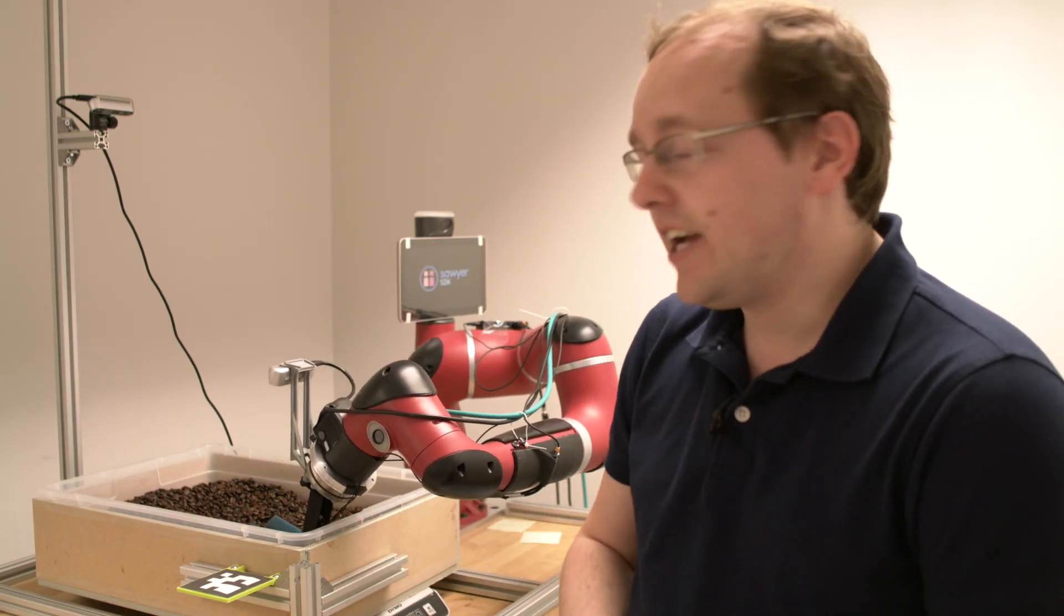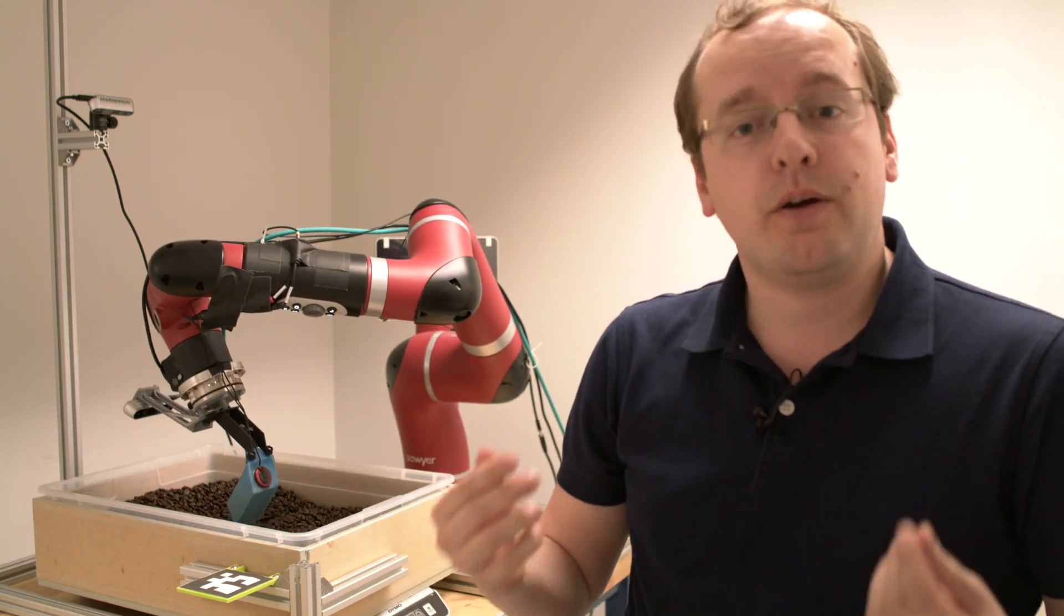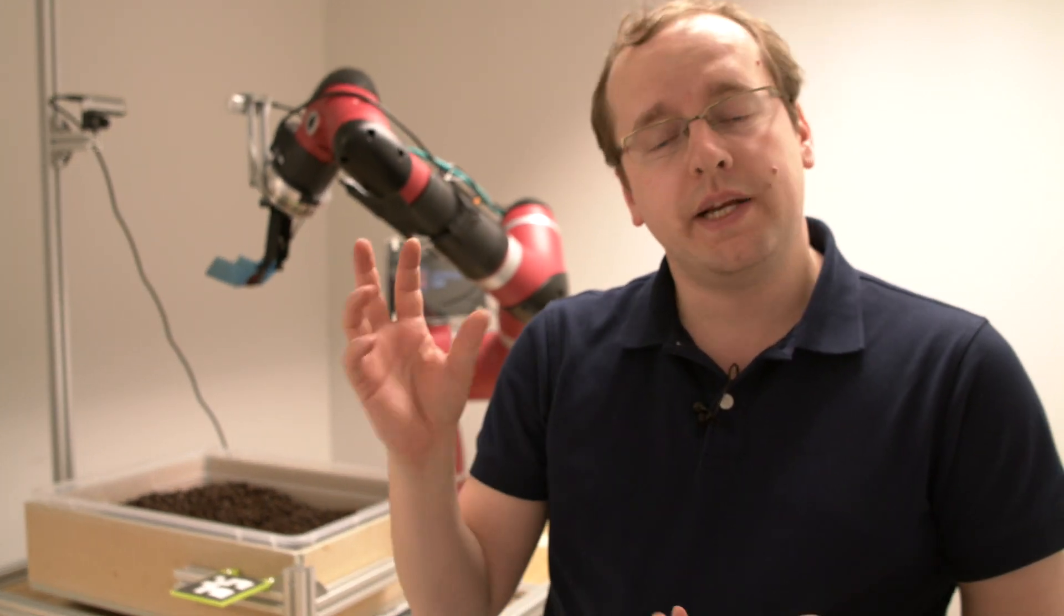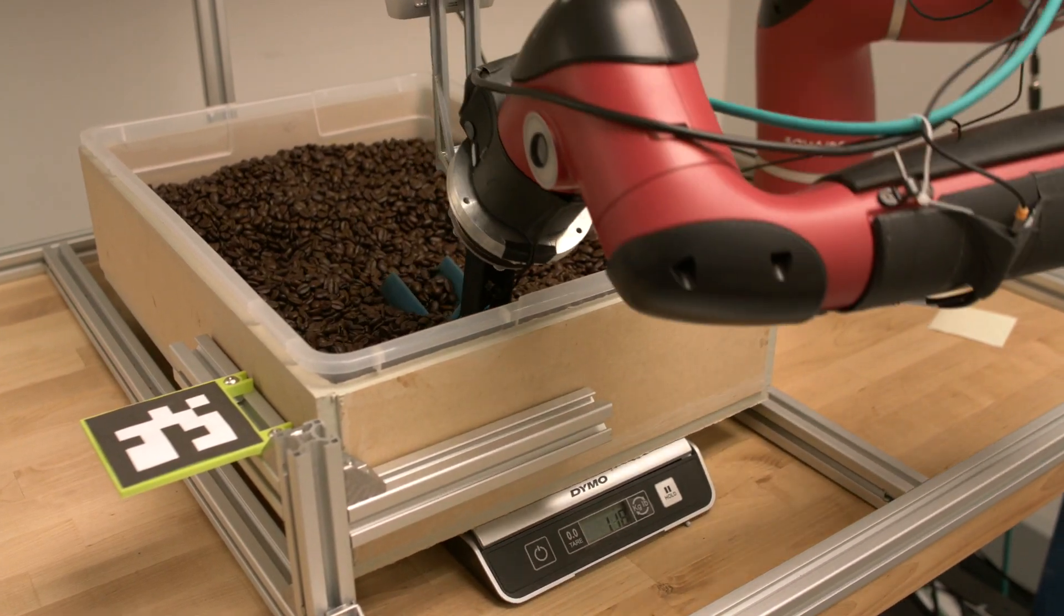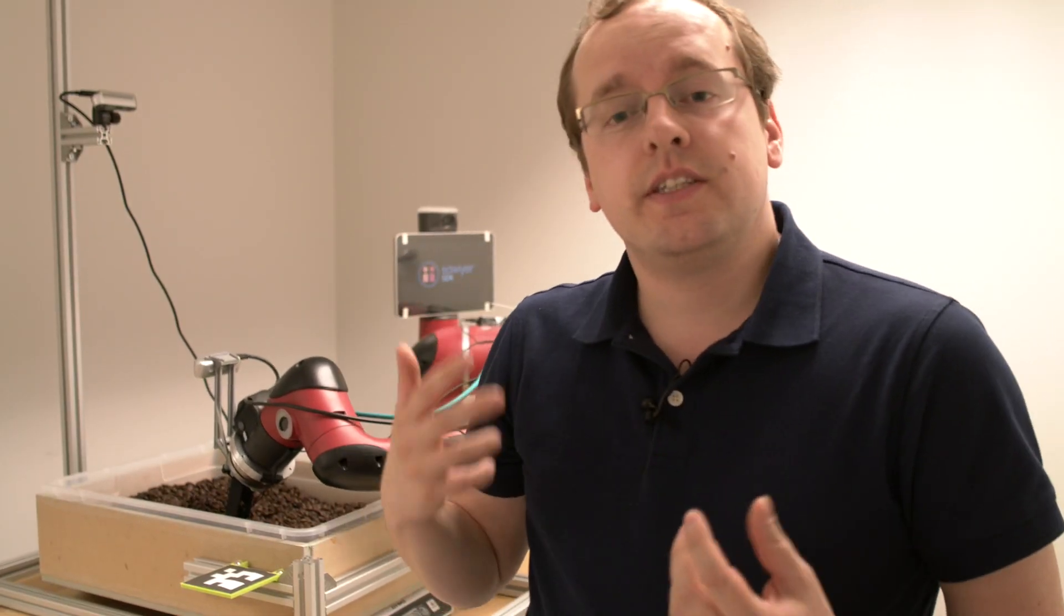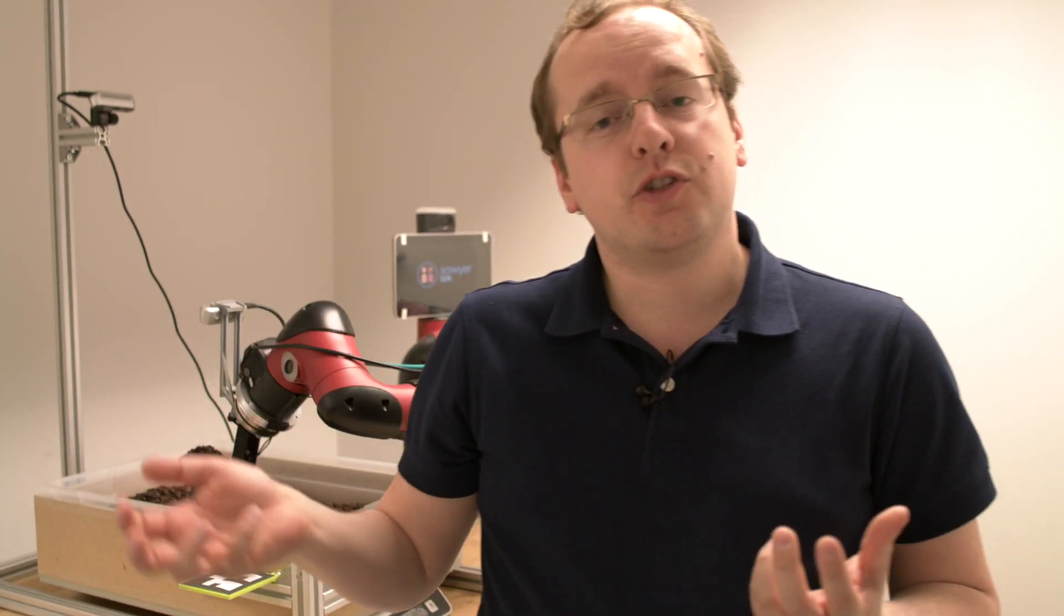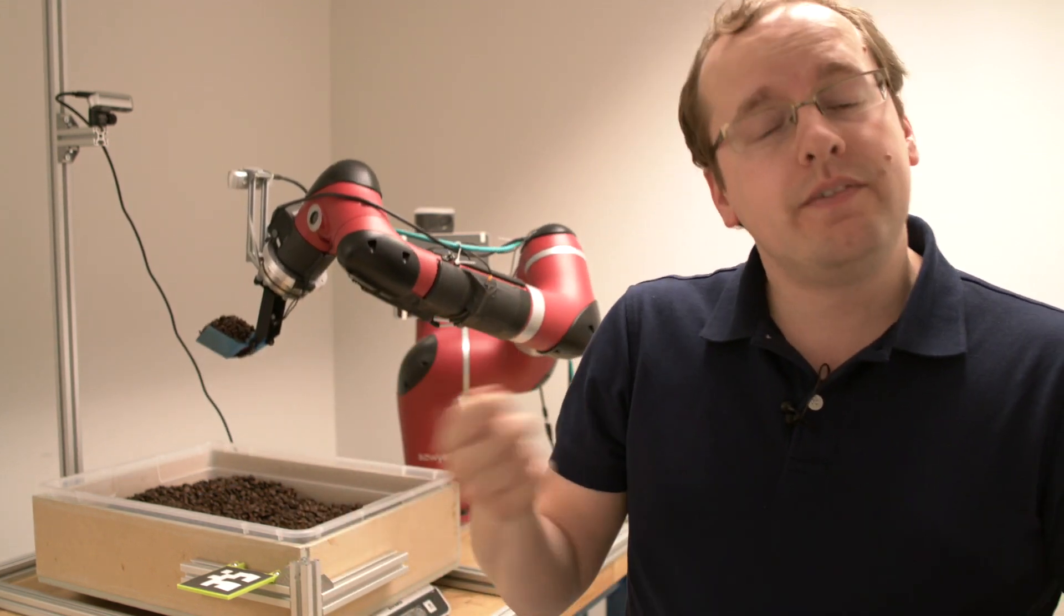One interesting project that we've been looking into is actually using vibration feedback or audio feedback. When humans perform manipulation tasks, we actually rely a lot on vibration feedback. When we're picking something up or breaking contact, we get very small vibrations which we can detect using our fingertips. For the robot's case, it can actually listen to the sounds of the material as it's scooping it, pouring it out, or even shaking it.